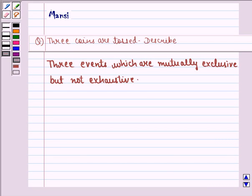Hello and welcome to the session. My name is Mansi and I am going to help you with the following question. The question says 3 coins are tossed. Describe 3 events which are mutually exclusive but not exhaustive.